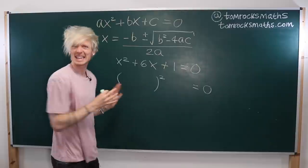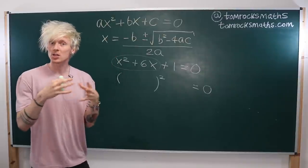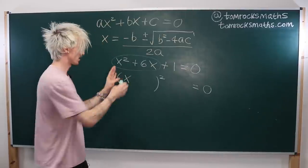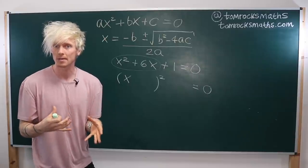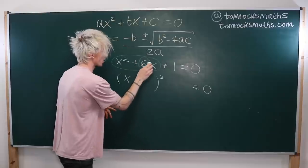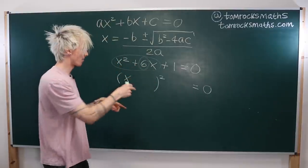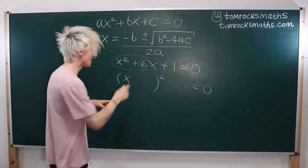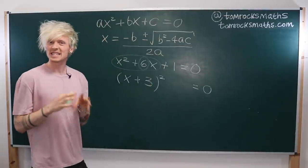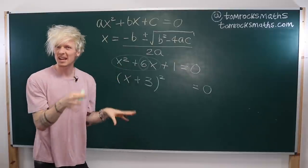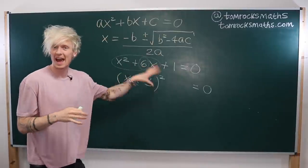Let's look at a simple example with the equation x² + 6x + 1 = 0. To figure out what goes in our bracket we look at the first two terms. To get the x² term we need x by itself in the bracket, and for the second term we look at the coefficient on x — we get one lot from x times the something and the same again from the something times x. So we want exactly half of this coefficient to go in our bracket: the first term is x and the second term is half the coefficient of x.